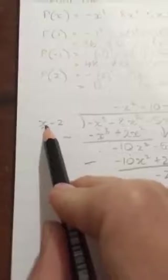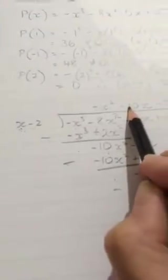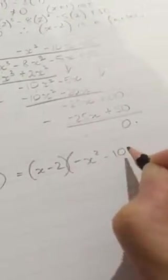So that means my polynomial can be divided into my divisor and my quotient. So I'm going to rewrite my polynomial in factored form. I've got x minus 2 times by negative x squared minus 10x minus 25.